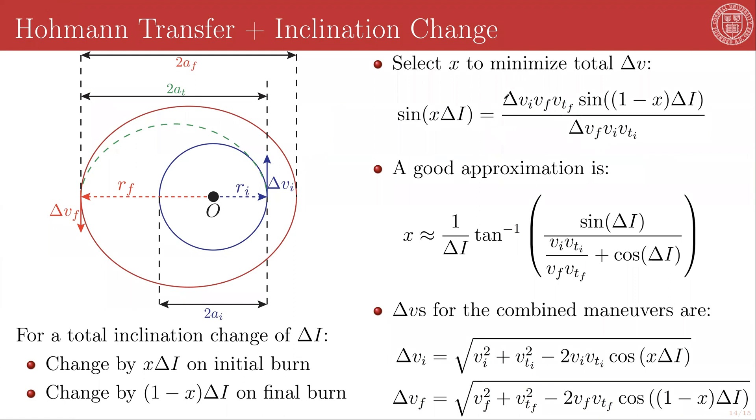And remember, delta VI is the burn that you're applying initially, and delta VF is the magnitude of the burn that you're applying to get onto the final orbit. This is another transcendental relationship. You cannot solve this directly for X, but you can solve this numerically via any one of the tools that we've previously explored.